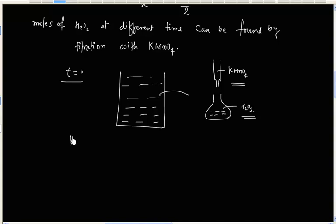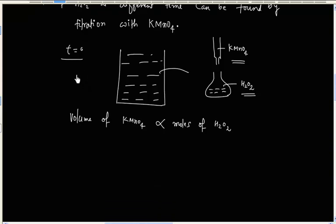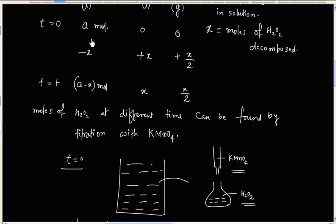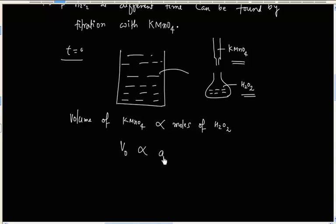volume of KMnO4 required is directly related to moles of H2O2 at T equals 0. So, we can say, volume of KMnO4 is directly proportional to moles of H2O2. Now, we can do this titration at T equals 0. So, volume of KMnO4 at 0 time is proportional to moles of H2O2 at 0 time. So, at 0 time we have A moles. So, V0 is the volume of KMnO4 at 0 time.